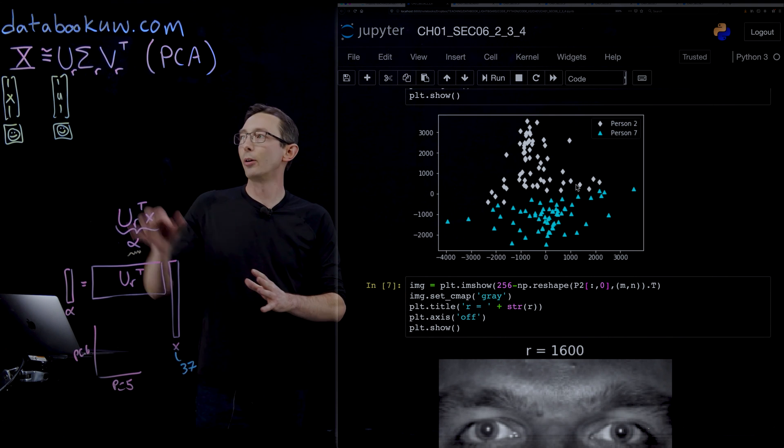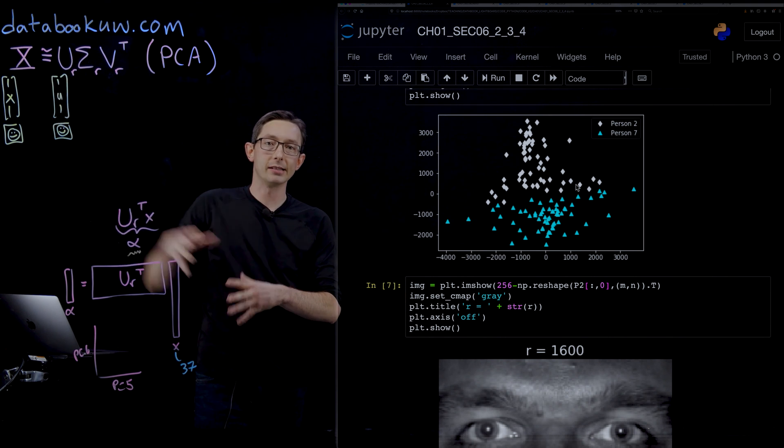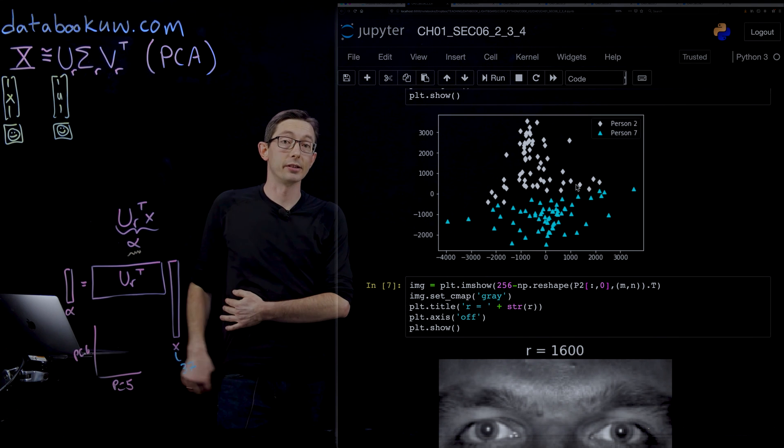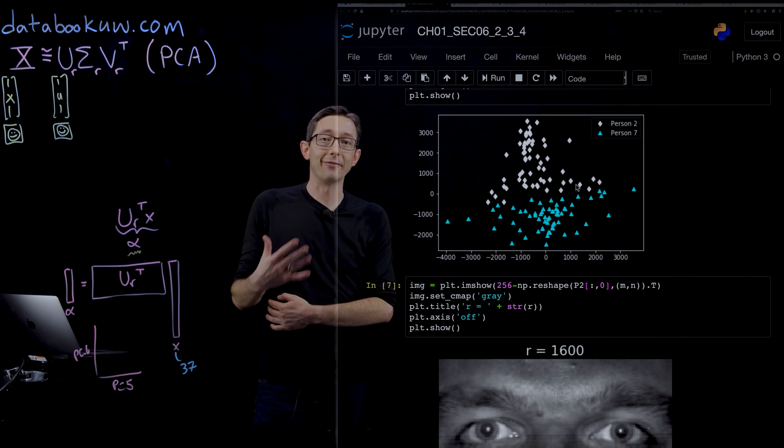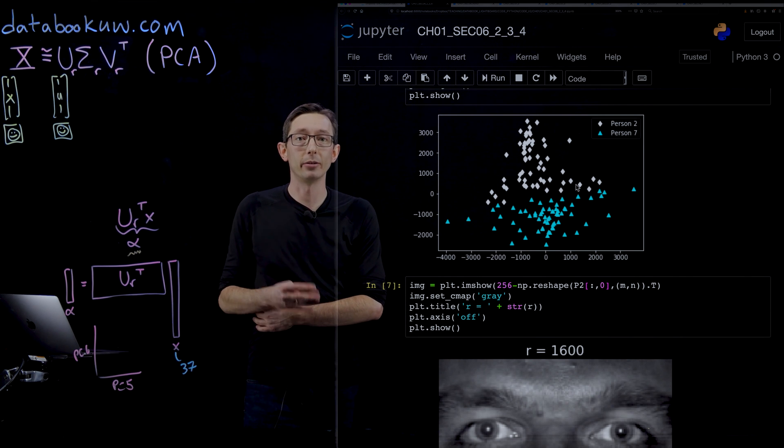This is pretty cool—you can use these principal components or the SVD modes, your eigenfaces, to do classification. I'll point out it's no coincidence that I chose principal component 5 and 6 and not principal component 1 and 2.